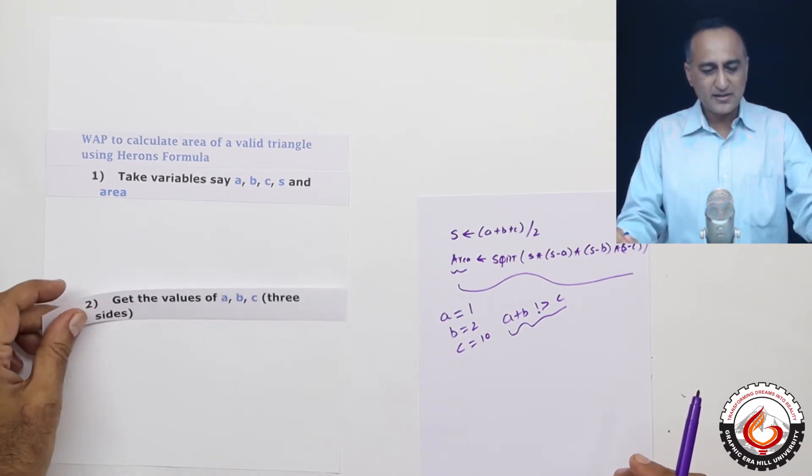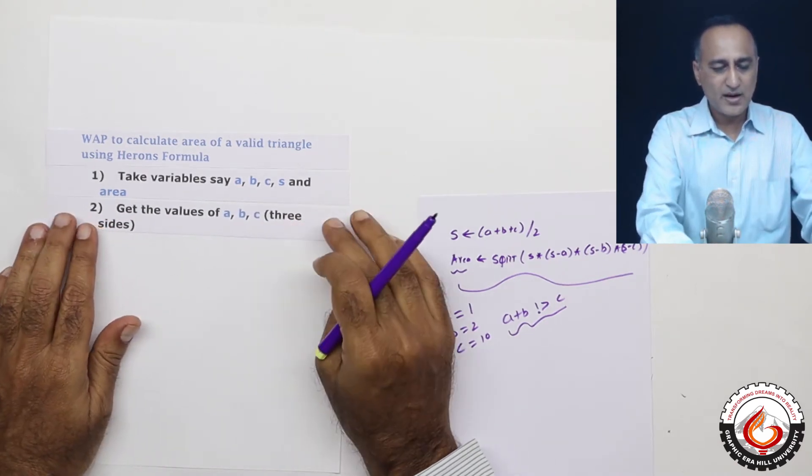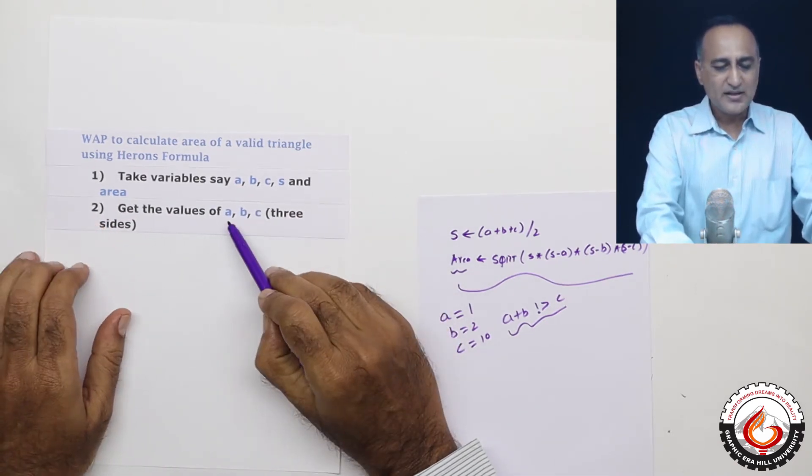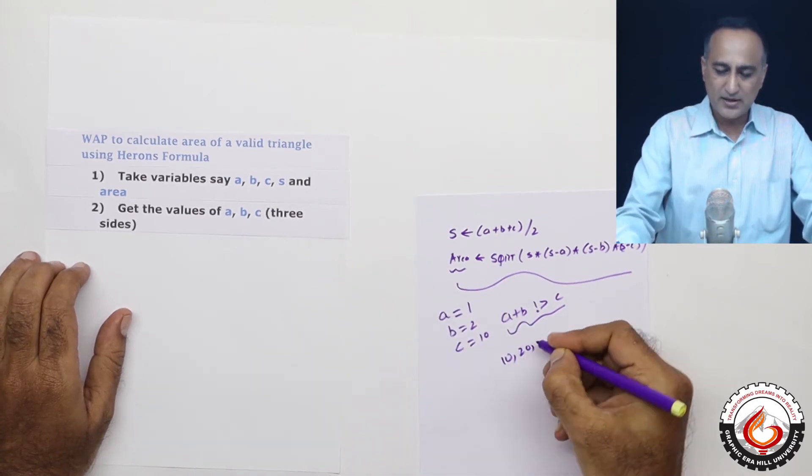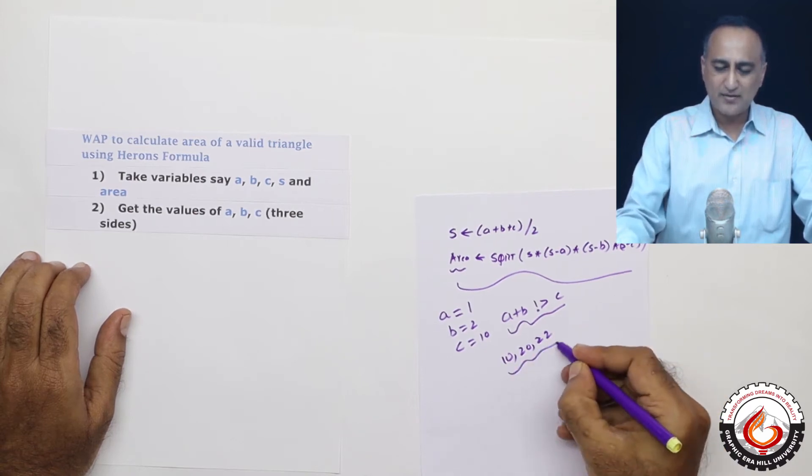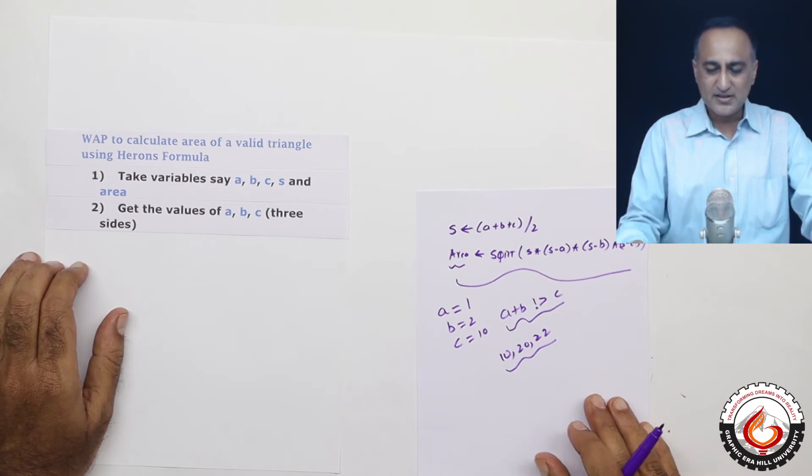So the next step is I will get the values of A, B and C. So I will ask the user to enter the values for A, B and C. So he could enter 10, 20 and 22. This is a valid triangle because the sum of any two sides is going to be greater than the third side.